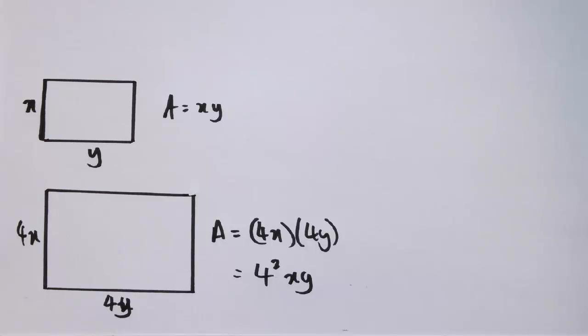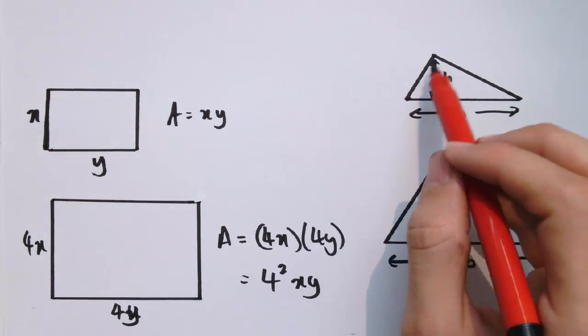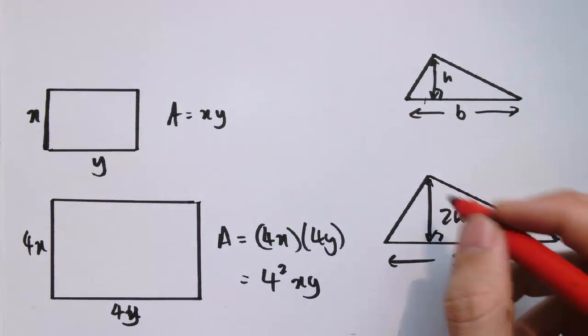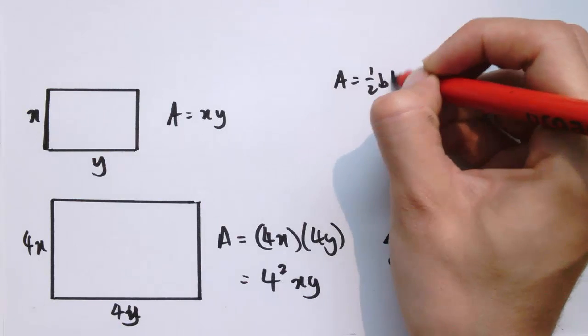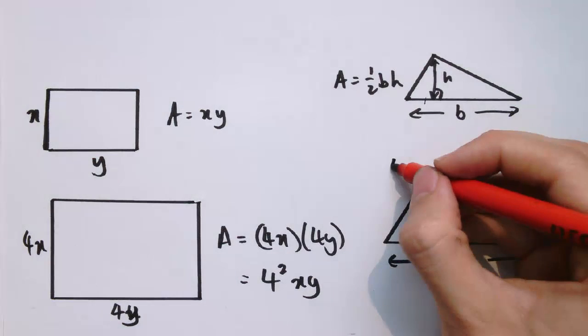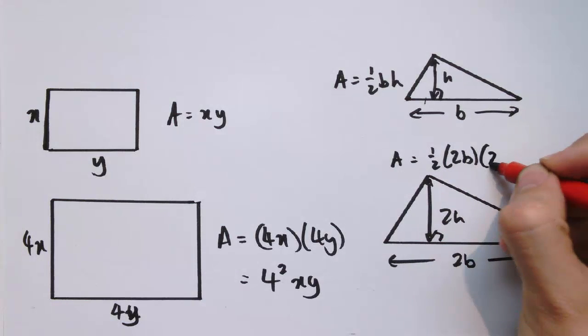And that would work just as well with other shapes. So say if I had a triangle with a certain base and perpendicular height, and I doubled that base and perpendicular height for another similar triangle, the area here would be a half base times height, and the area here would be a half times 2 base times 2 height.